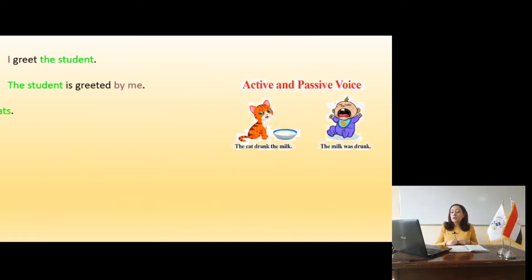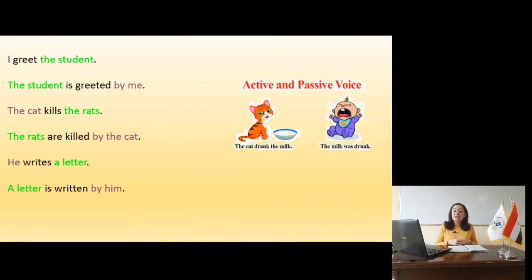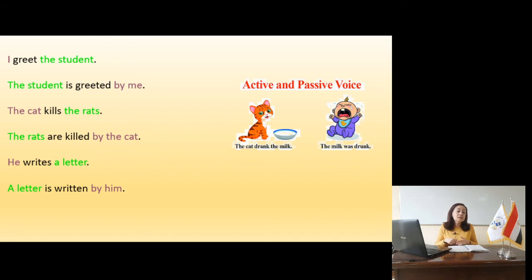Slide 10 — first example: 'I greet the student.' I is the subject, greet is the verb in the present simple, the student is the object. Begin with 'the student,' then verb to be in present simple — 'is' — then past participle 'greeted.' Result: 'The student is greeted by me.' Second example: 'The cat drank the milk.' Drank is past simple, the milk is the object and uncountable, so use 'was.' Result: 'The milk was drunk by the cat.'